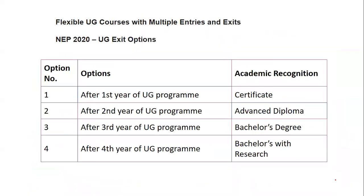There are flexible UG courses with multiple entry and exit options with corresponding certifications. After the first year of UG, you get a certificate. After the second year, you can exit with an advanced diploma. After completing the third year, you receive a bachelor's degree. After completing the fourth year, you receive a bachelor's degree with research. These multiple entry-exit certifications for UG are very important.